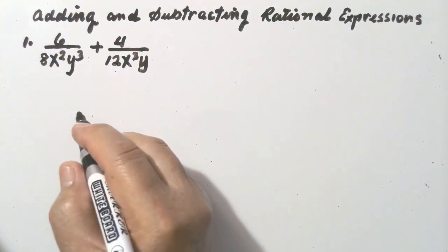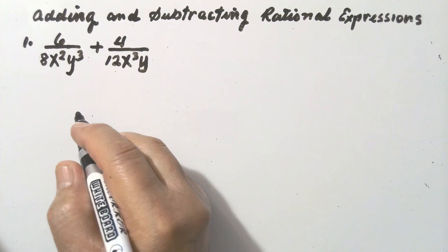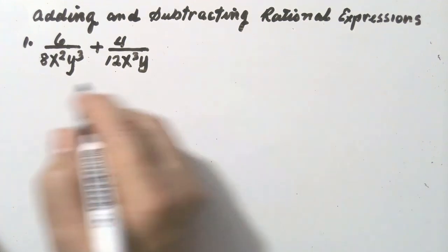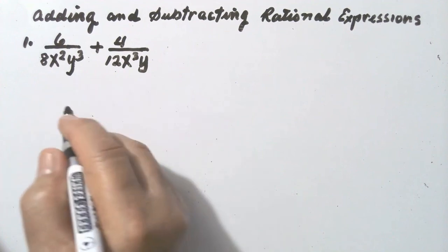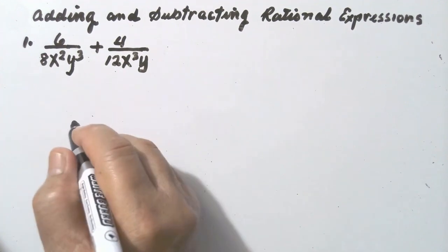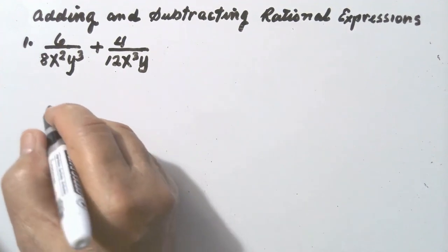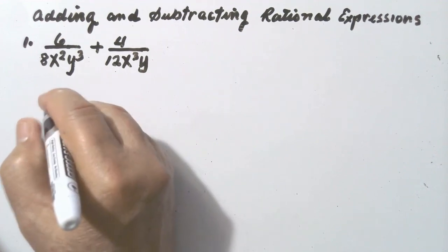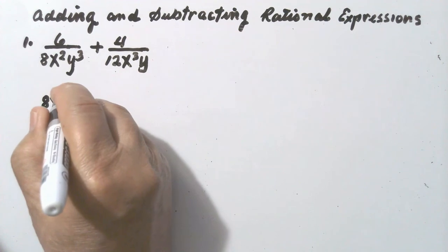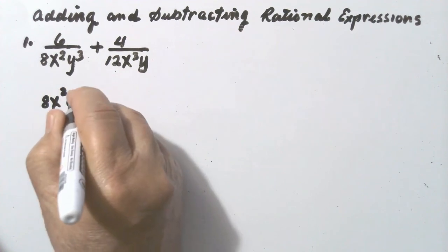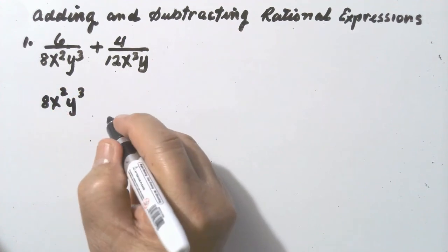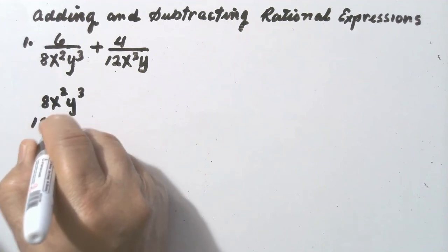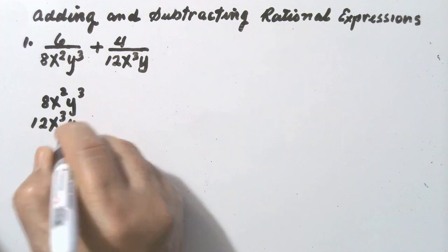Our topic for today is adding and subtracting rational expressions. The first thing to do is to find the least common denominator. The first denominator is 8x squared y cubed, and the second one is 12x cubed y.